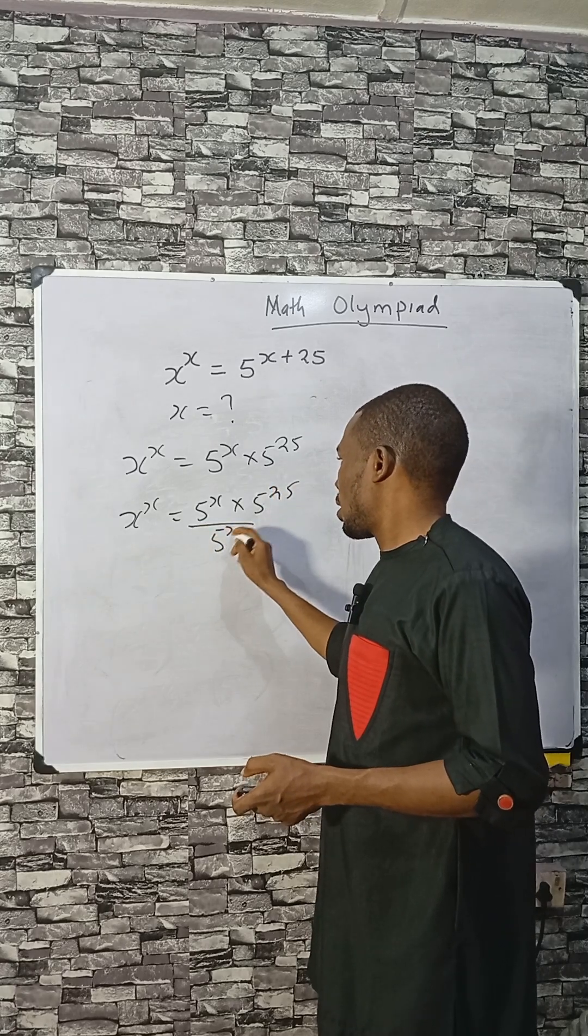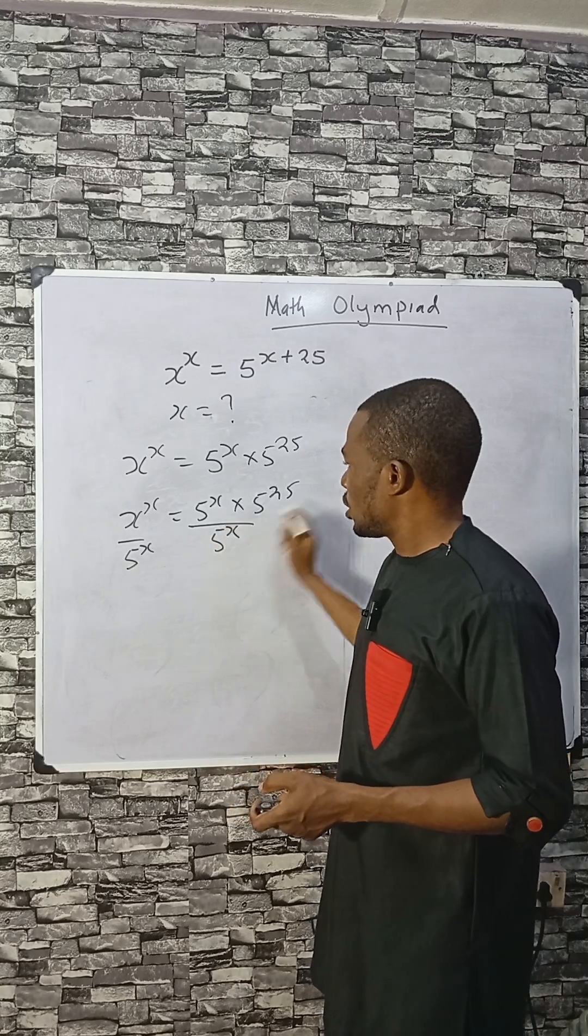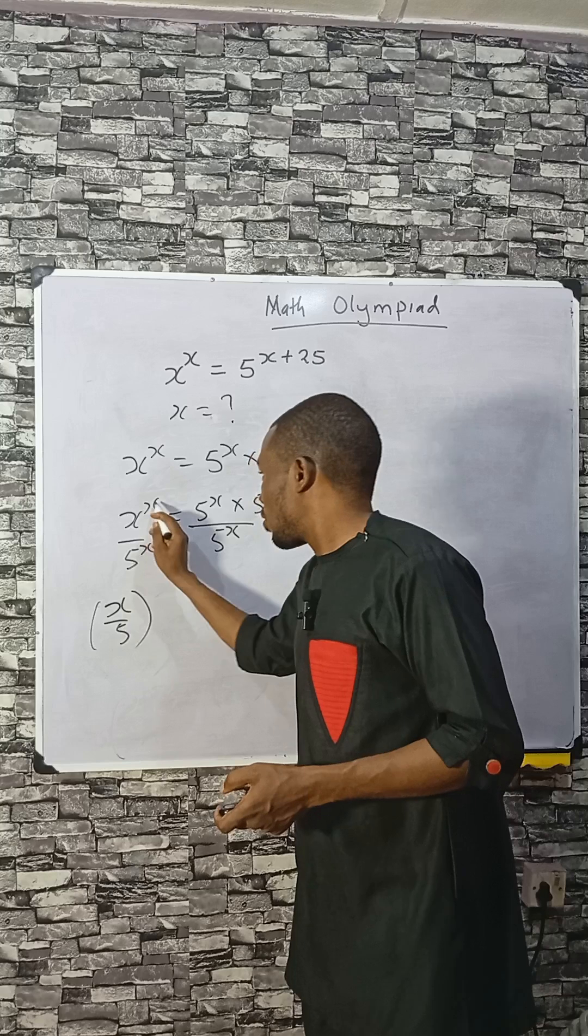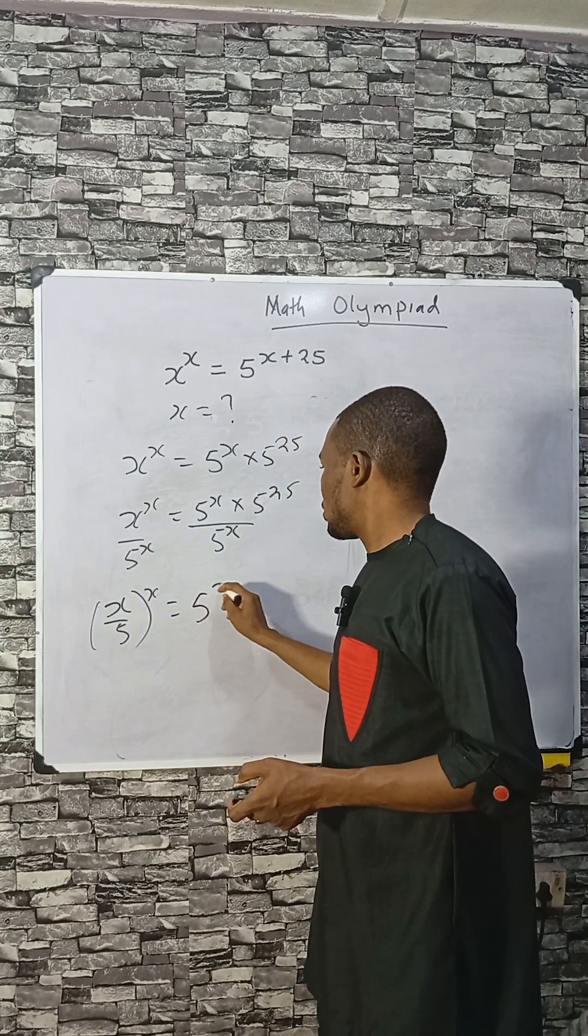Divided by 5 to the power x, the same thing here, so that this can take care of this. Now we have here as x divided by 5, or raised to the power of x, equals to 25.